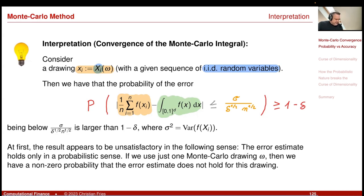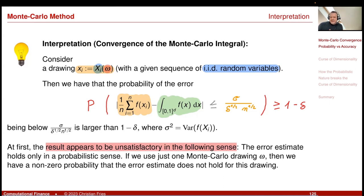The probability that this error bound holds is larger or equal to one minus delta. At first, this result appears really unsatisfactory, because if you just do this with a single sequence — a single omega — you do not know how likely it is that you have missed your error estimate. So we have this nice convergence rate only with a certain probability; there is a probability that we actually miss this bound.